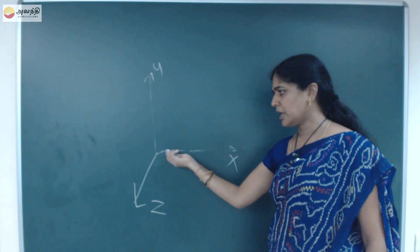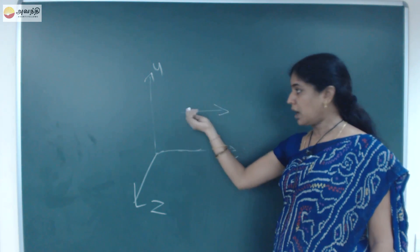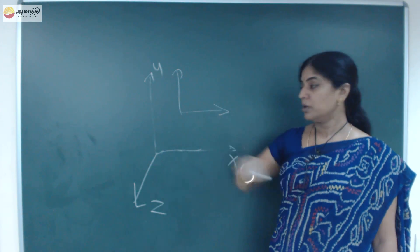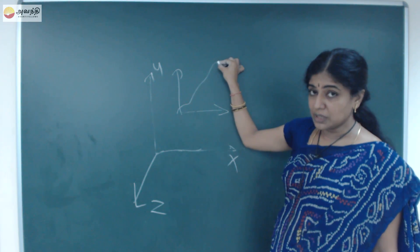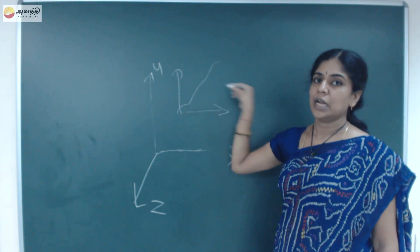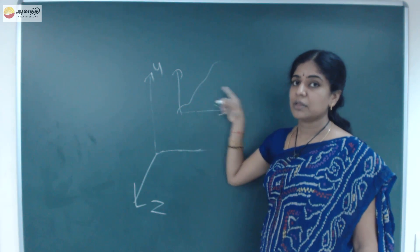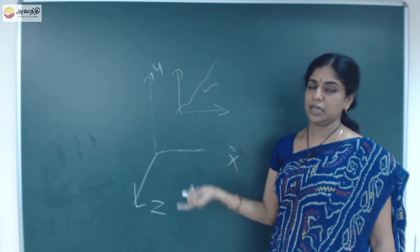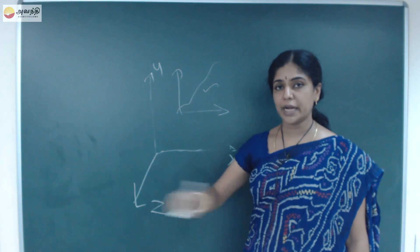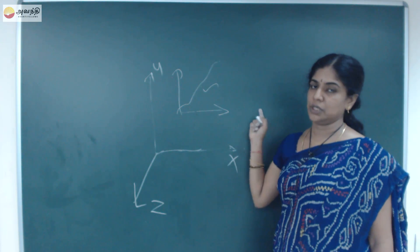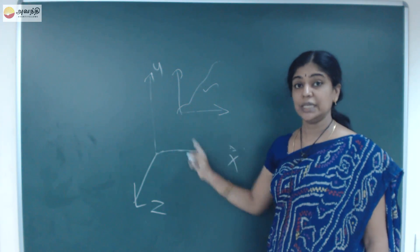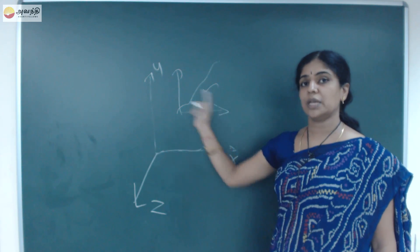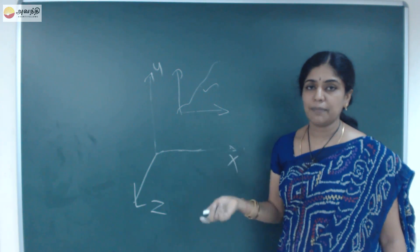When a bird flies, how does it move? It may move in the x-axis, or it may move in the y-axis. If it moves in the horizontal direction, it also moves in the vertical direction. So this bird can move in all three coordinates. Now I can say the motion of the bird is three-dimensional motion. So, motion in one dimension means moving along one coordinate; two-dimensional motion means moving in any two coordinates; and three-dimensional motion means moving in all three coordinates.